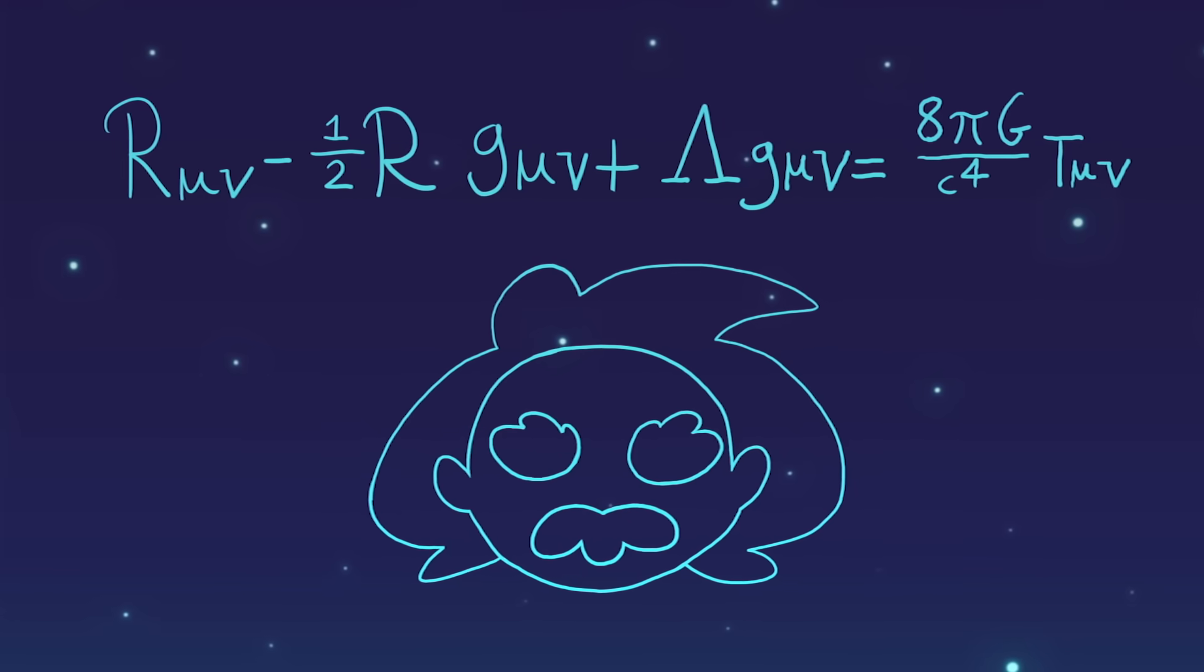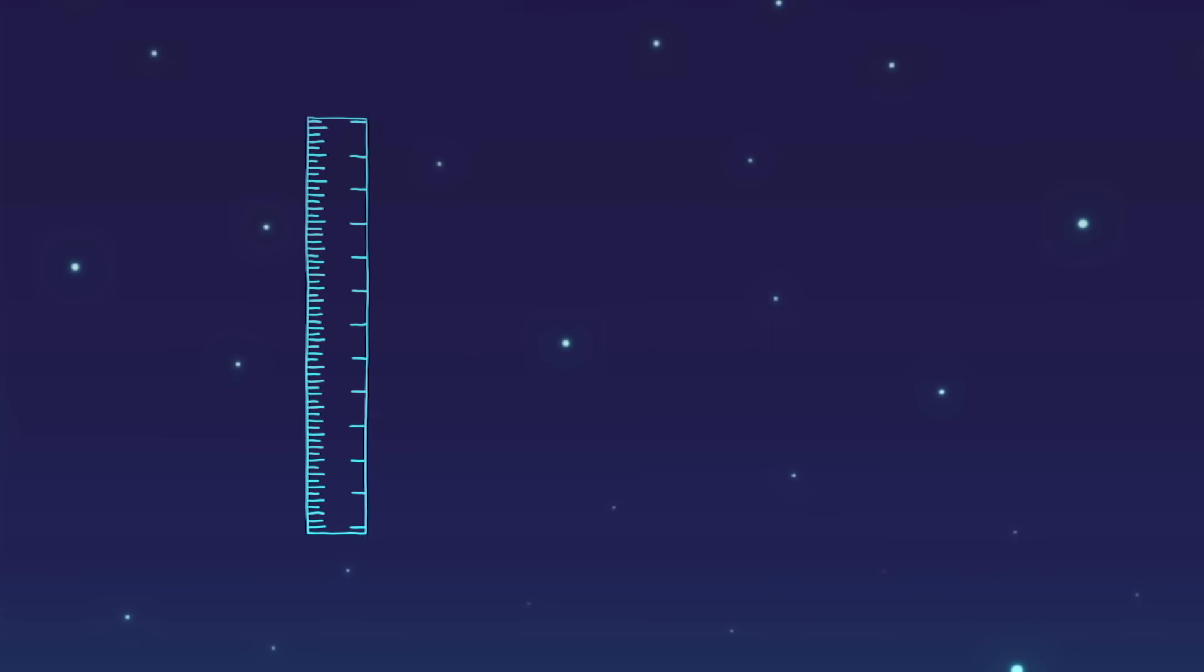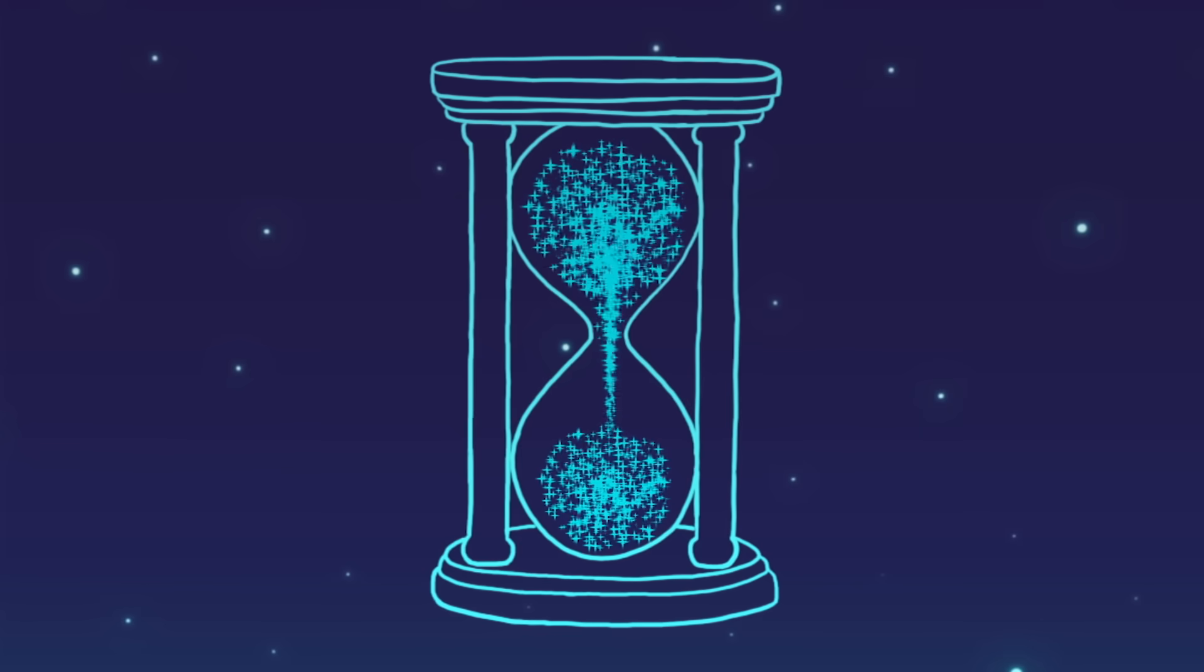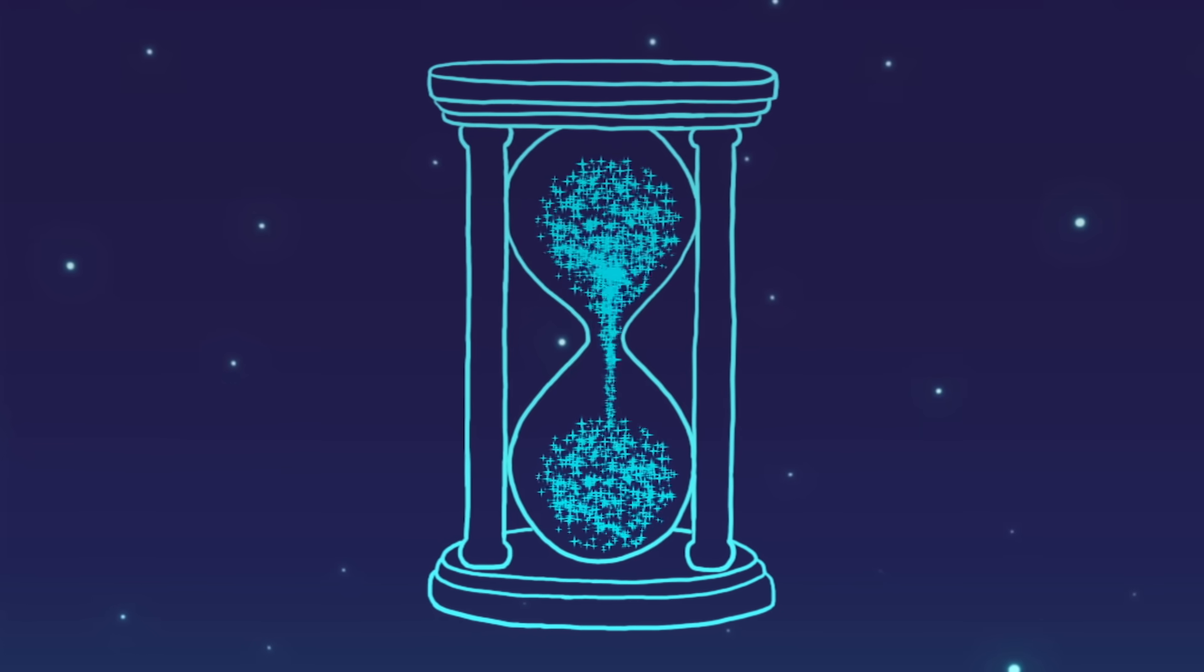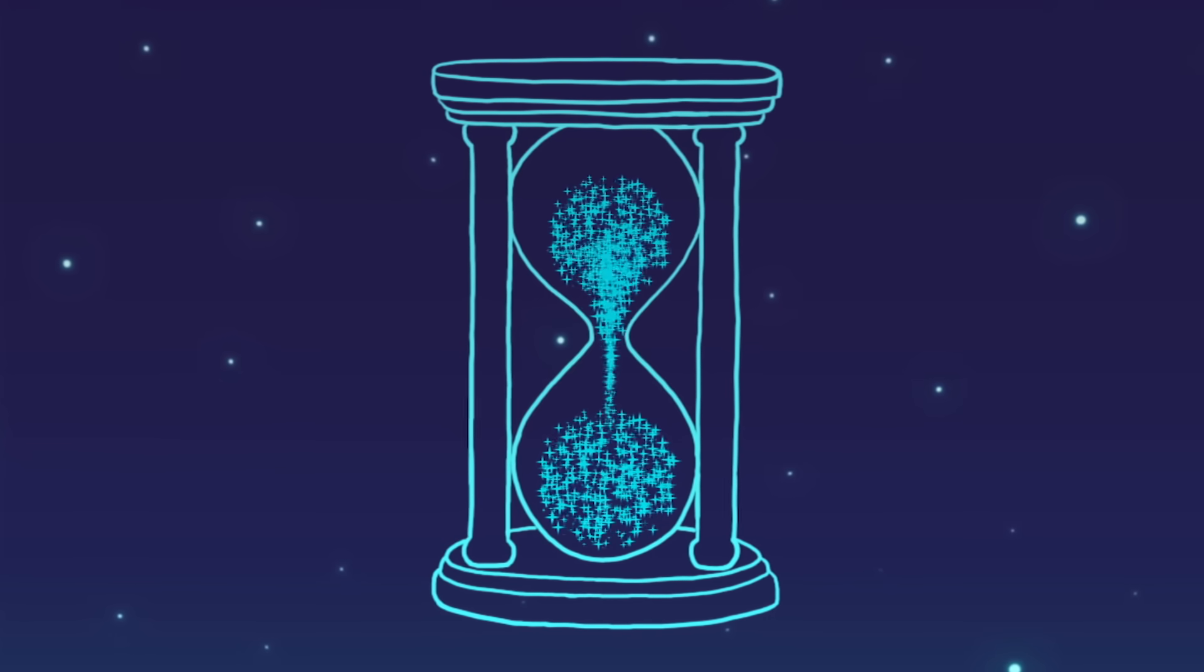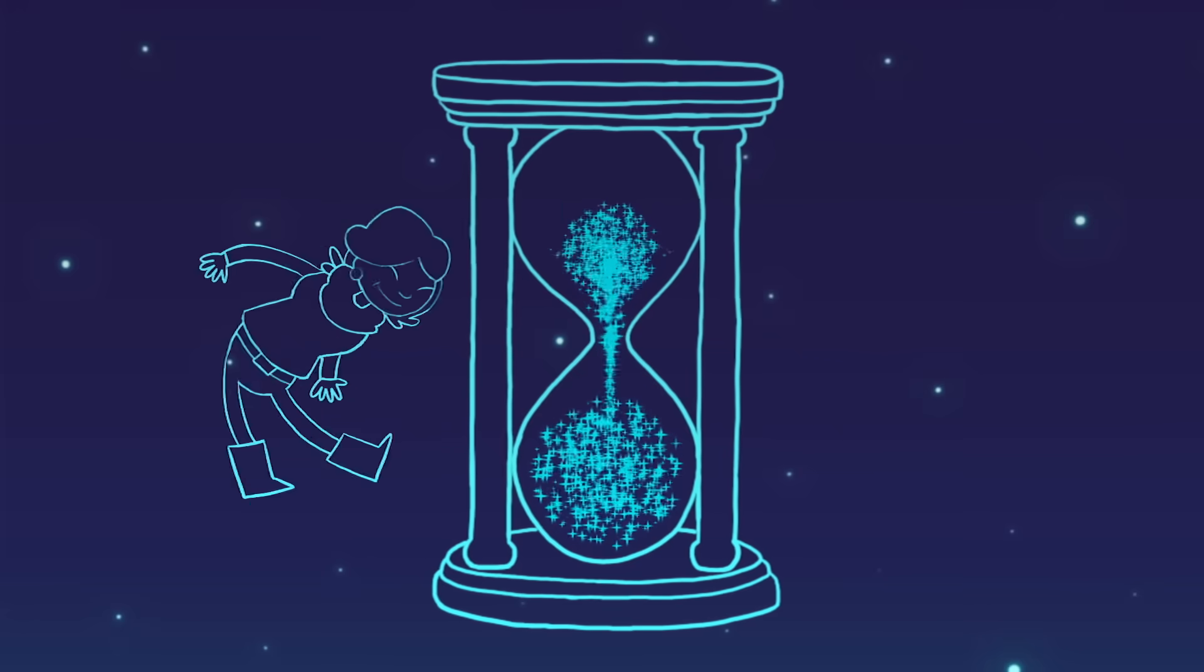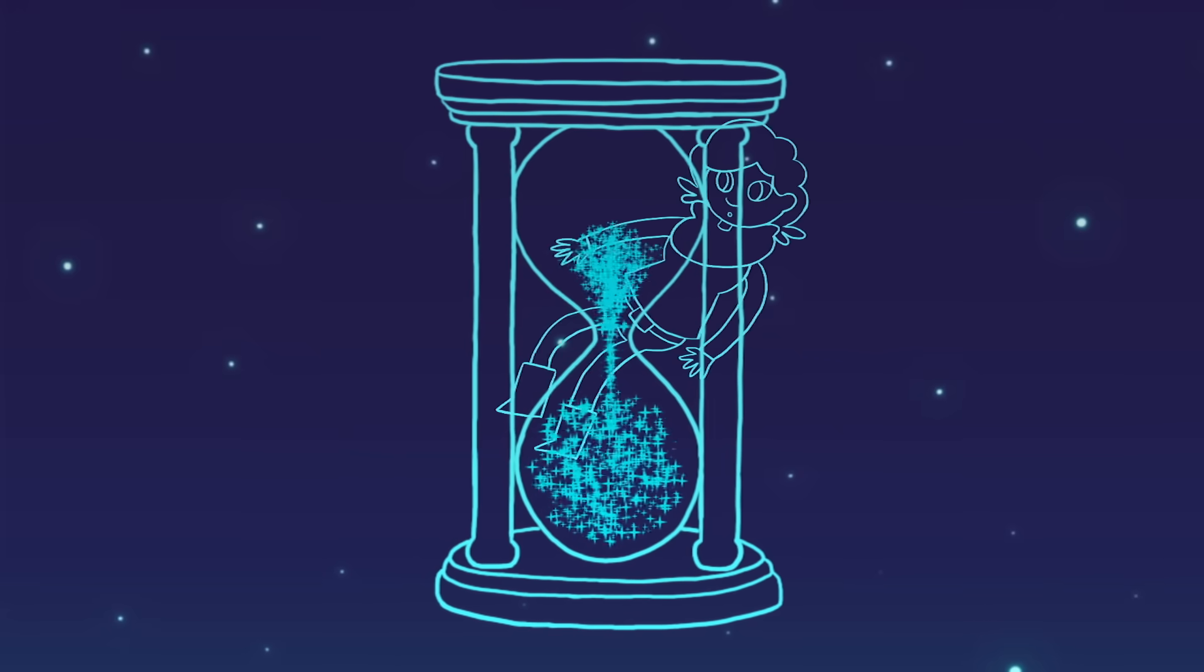Einstein's equations of general relativity describe space and time as a kind of interconnected fabric for the Universe. This means that what we know of as space and time exist only as part of the Universe and not beyond it.